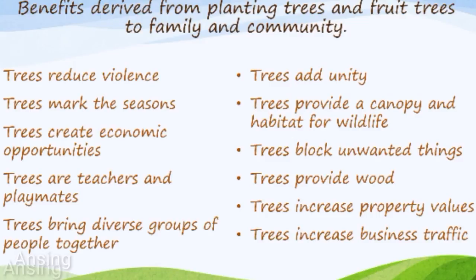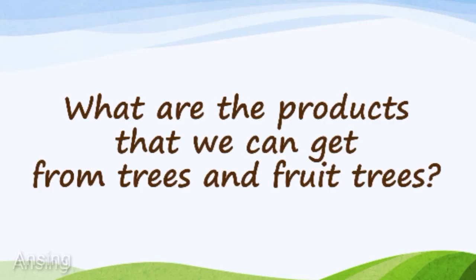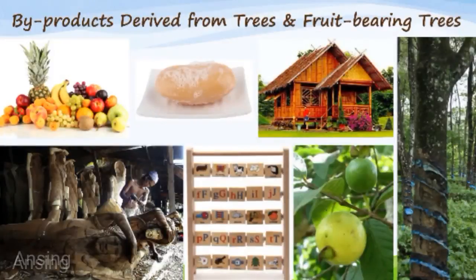Trees provide wood — in suburban and rural areas, trees can be selectively harvested for fuel and craft wood. Byproducts derived from trees and fruit-bearing trees include fruits, soap, wood products, furniture, and fixtures. Products from the rubber tree are also an example.